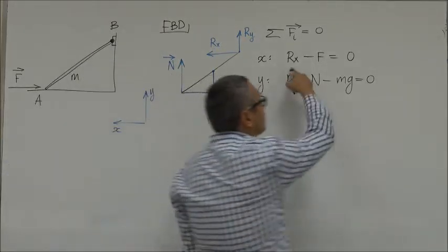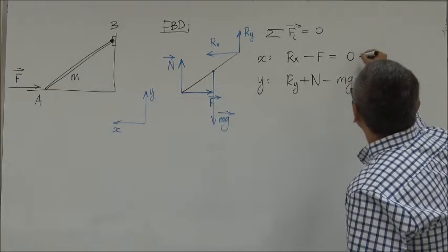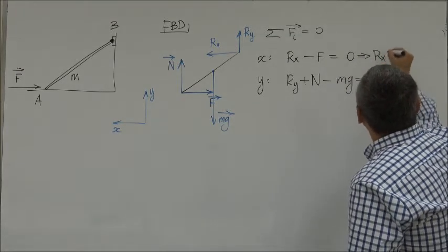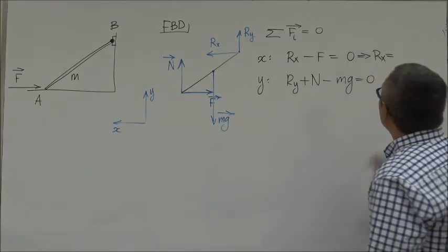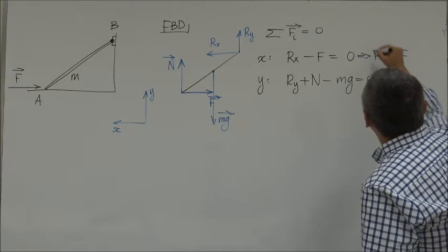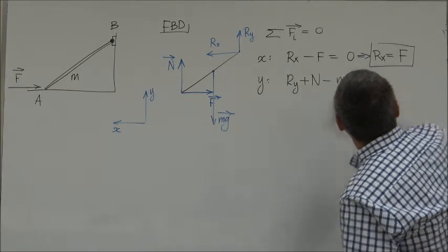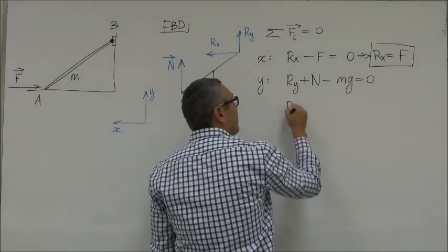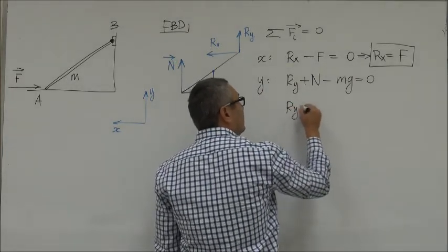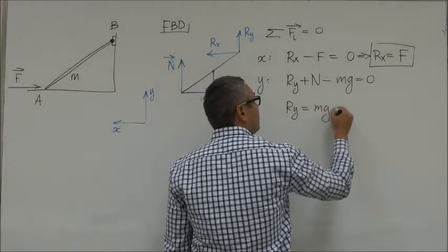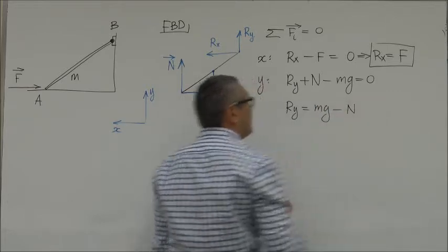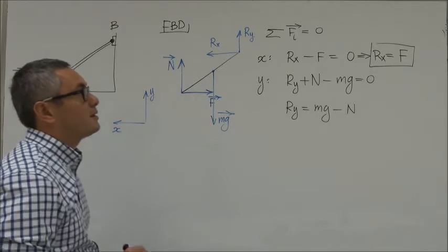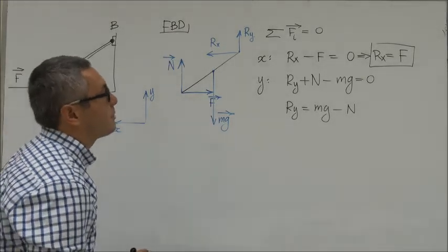From the X equation we can already say that Rx equals F, so we have one component. From the Y equation, Ry equals mg minus N. So now we need to find the normal force N.